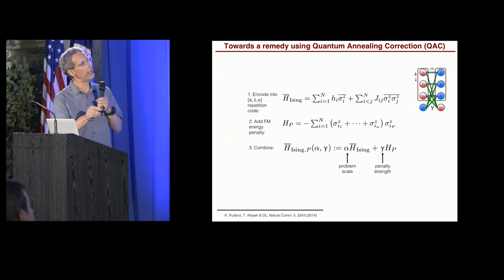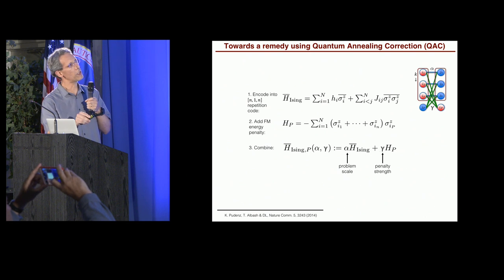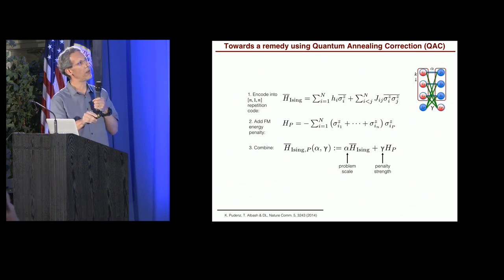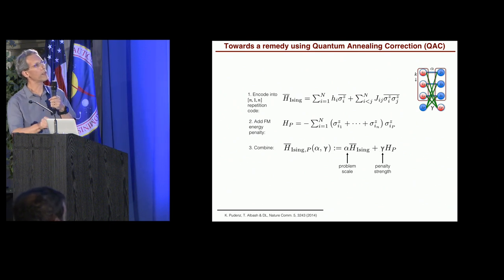We combine the encoded Hamiltonian with the penalty term. There's a coefficient here, alpha, which we call the problem scale. There is another coefficient here, gamma, which is the penalty strength. This is optimized for the results that I'll be showing you. And alpha you can think of as one.